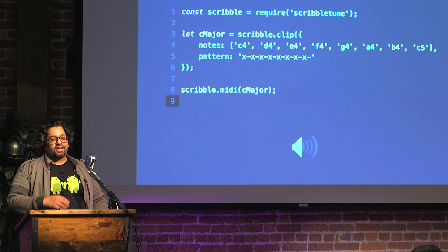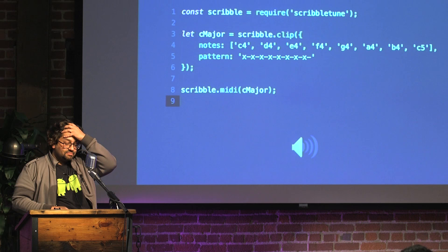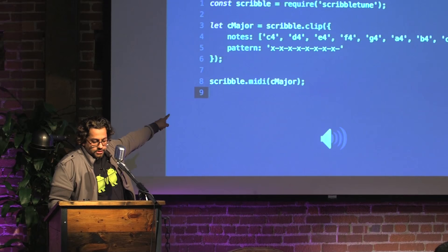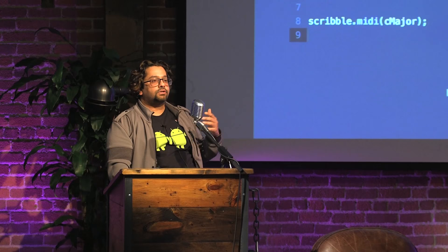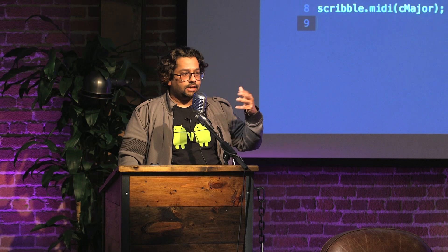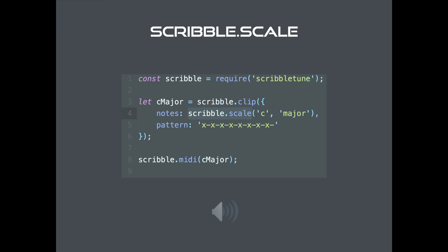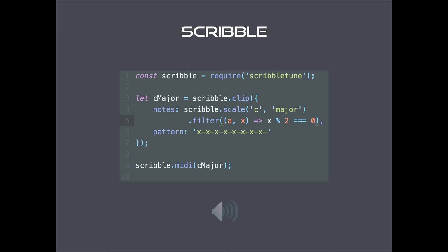We're getting nowhere close to musical so far, and I'm aware of that — but we'll get there. Since C D E F G A B is an array, you don't need to type out the notes or remember the scale. ScribbleTune has a third method, `scribble.scale`, which lets you directly get the scale you want. In this case, `scribble.scale('C major')` does the same thing. And because `scribble.scale` returns an array, you can use array functions on top of it.